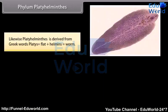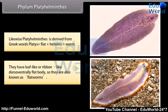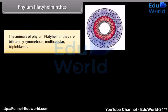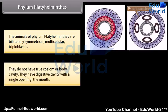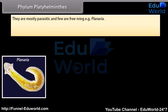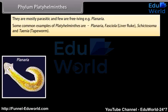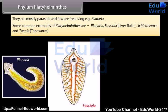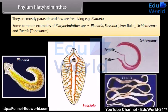Phylum Platyhelminthes. Platyhelminthes is derived from Greek words: platis, meaning flat, plus helminthus, meaning worm. They have leaf-like or ribbon-like, dorsal-ventrally flat body, so they are also known as flatworms. The animals of Phylum Platyhelminthes are bilaterally symmetrical, multicellular, and triploblastic. They do not have a true coelom or body cavity. They have a digestive cavity with a single opening — the mouth. They are mostly parasitic, and few are free-living, e.g. Planaria. Some common examples are Planaria, Fasciola (Liver Fluke), Schistosoma, and Taenia (Tapeworm).